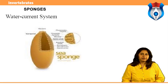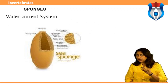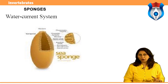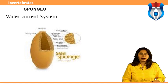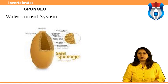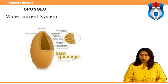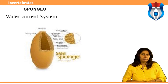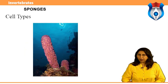Form and function in sponges — water current system: the essential elements include the pores or ostia through which water enters, the choanocytes or collar cells which are flagellated cells that generate water currents and capture food, and the oscula, openings through which water is expelled.